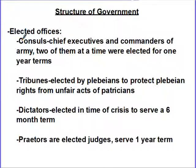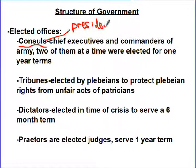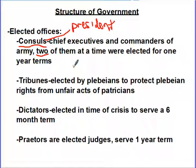What were these elected offices? First is the consul — kind of like the president, very similar to the functions of the president of the United States even today. Consuls are chief executives and commanders of an army. Two of them serve at a time. The Romans were very fearful of putting too much power into the hands of one person, so two consuls are elected for one-year terms and basically oversee the government.